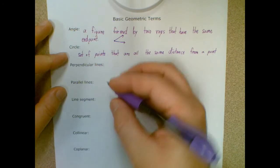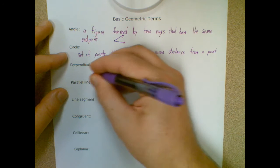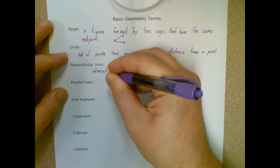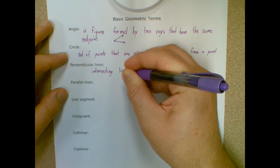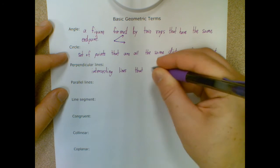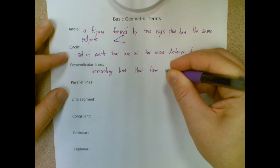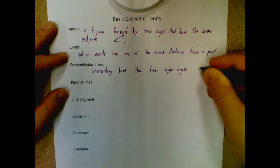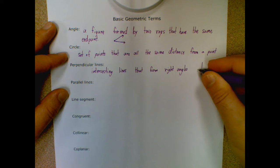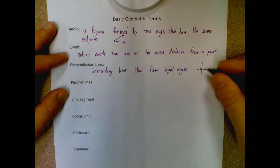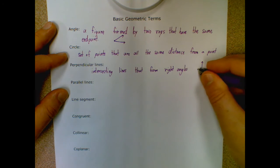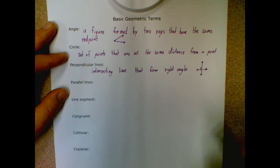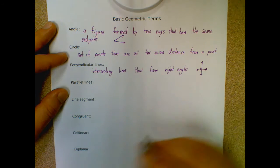Perpendicular lines: the official definition is intersecting lines that — and this is the key — form right angles. So that means they're going to have 90-degree angles, so these two lines would be perpendicular because they meet at right angles at 90 degrees.